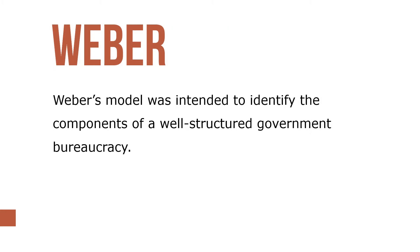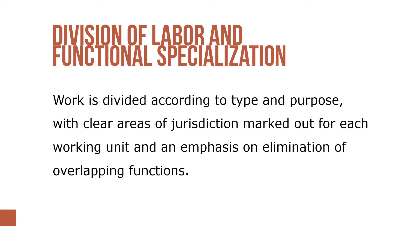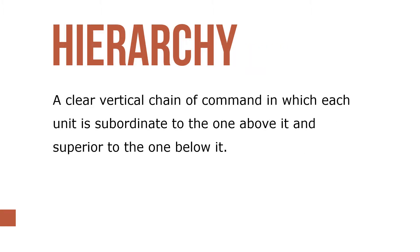Weber's model was intended to identify the components of a well-structured government bureaucracy. He prescribed the following five key elements. First, the Division of Labor and Functional Specialization: work is divided according to type and purpose, with clear areas of jurisdiction marked out for each working unit and an emphasis on the elimination of overlapping function. Second, hierarchy: a clear vertical chain of command in which each unit is subordinate to the one above it and superior to the one below it.